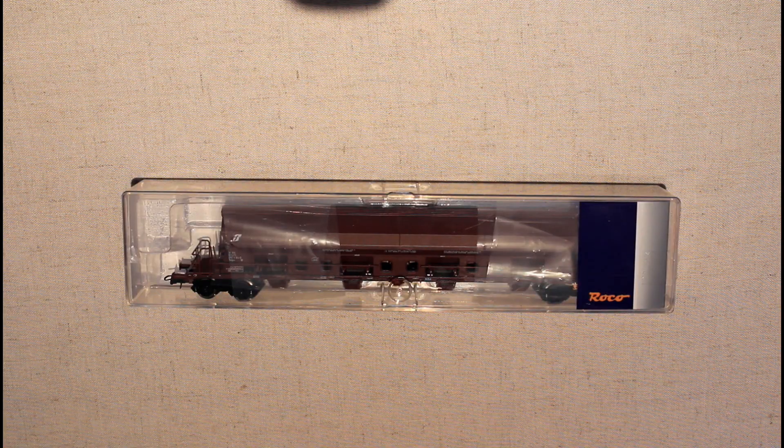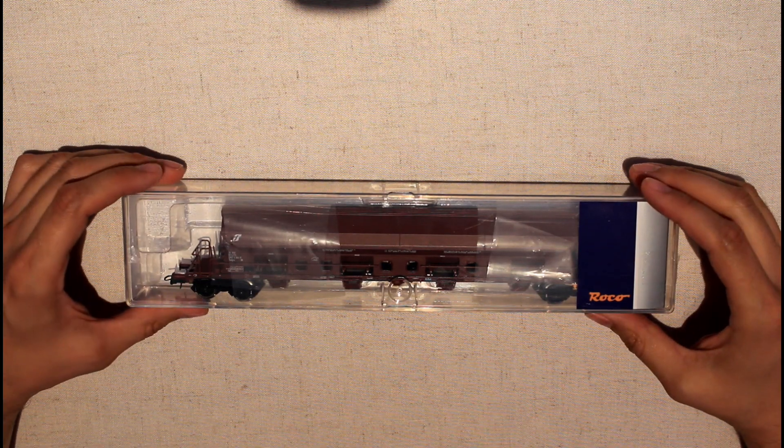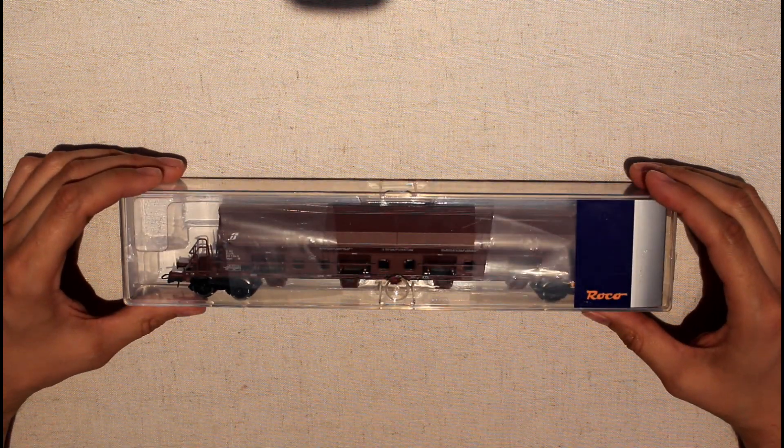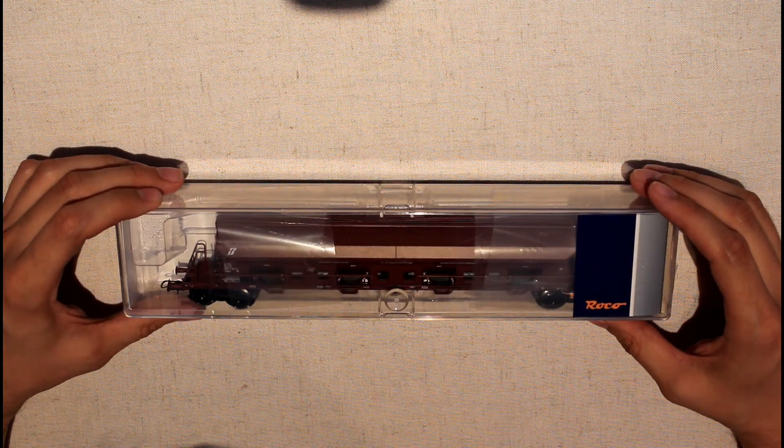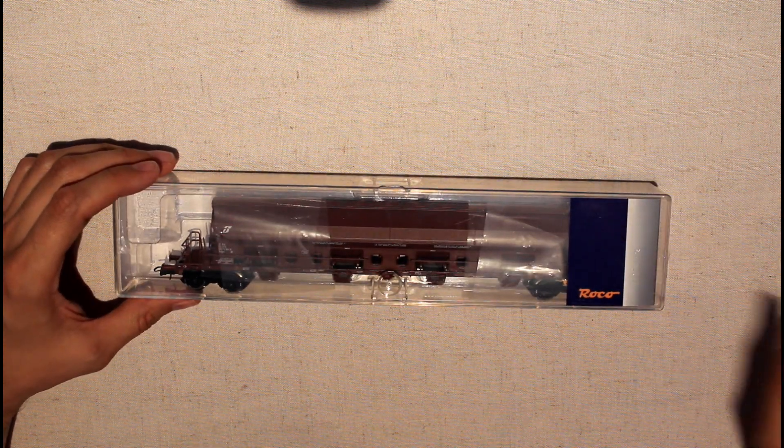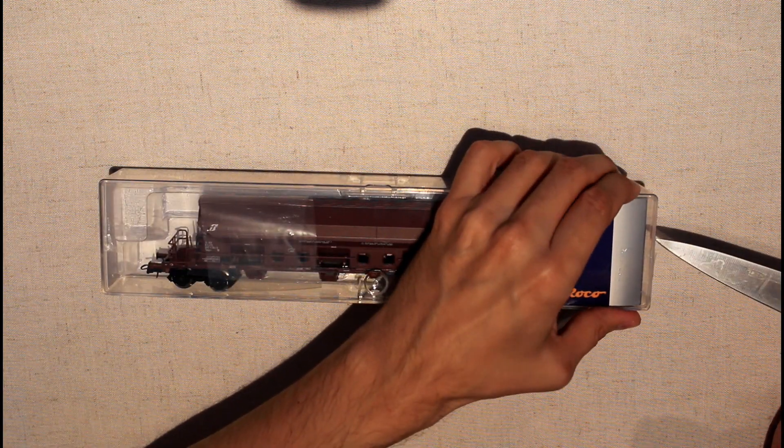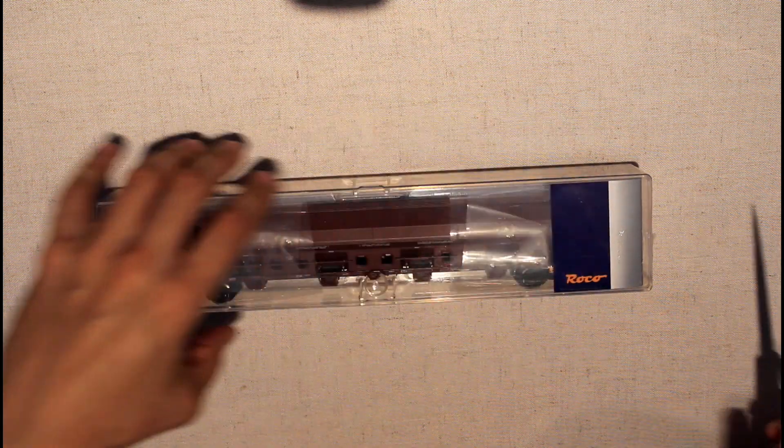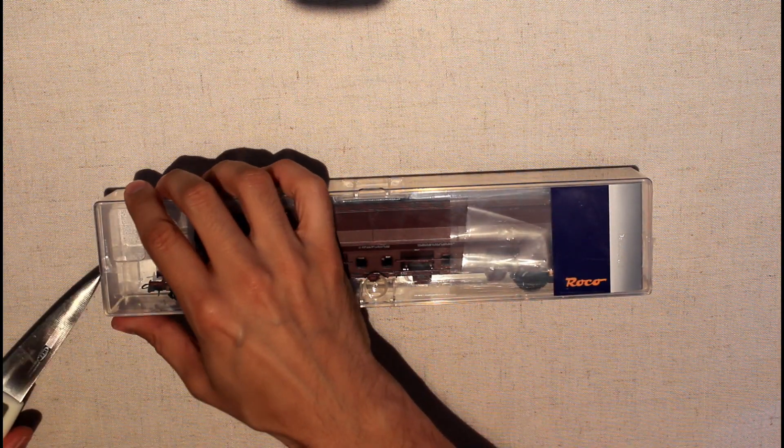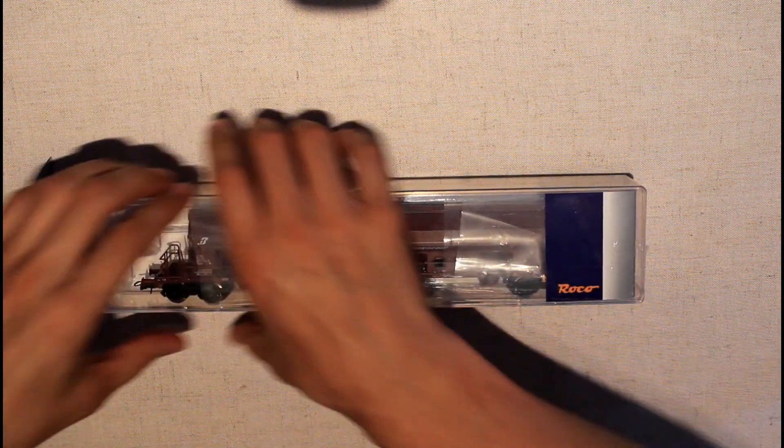What we have here is a Rocco wagon with number 76407. It's an HO gauge swing roof wagon of the epoch 6. There's still some tape, so let me just remove this.